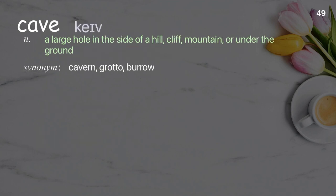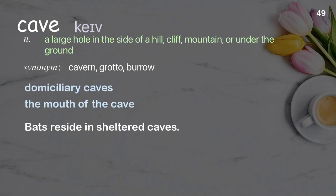Cave: A large hole in the side of a hill, cliff, mountain, or under the ground. Examples: Domiciliary caves. The mouth of the cave. Bats reside in sheltered caves.